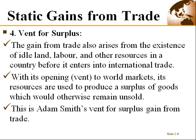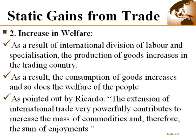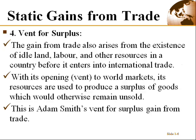So to recap the four static gains: first, maximization of production; second, increasing welfare; third, increasing national income; and fourth, vent for surplus — where resources that would have been idle are utilized to increase output. Now moving to the dynamic gains from trade, the first dynamic gain is efficiency in employment of resources.